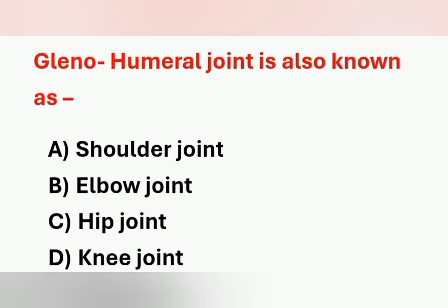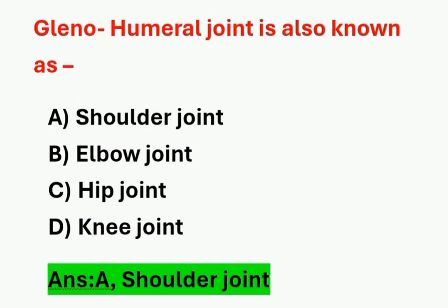Next question: the glenohumeral joint is also known as which joint? Option A – shoulder joint. Option B – elbow joint. Option C – hip joint. Option D – knee joint. The glenohumeral joint is also known as the shoulder joint. Option A is the correct answer.